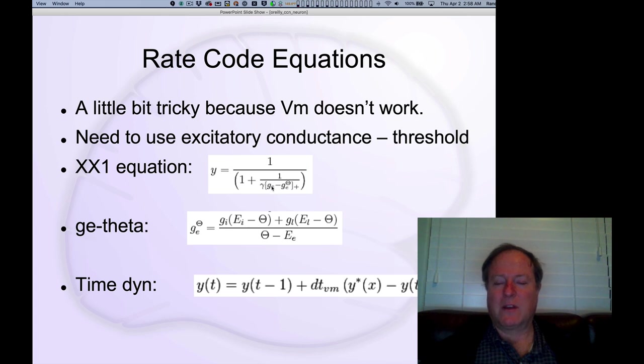There's a gain term gamma that multiplies this difference between the current excitatory current minus the threshold. It's a little bit interesting. We actually did the wrong thing originally with our model for many years and tried to express the rate of firing in terms of the membrane potential, because that's what literally is driving the spiking. But it turns out that's not a good way of capturing what brains do. So the firing rate is driven directly from the excitatory current, but relative to this ge theta term which is the threshold.